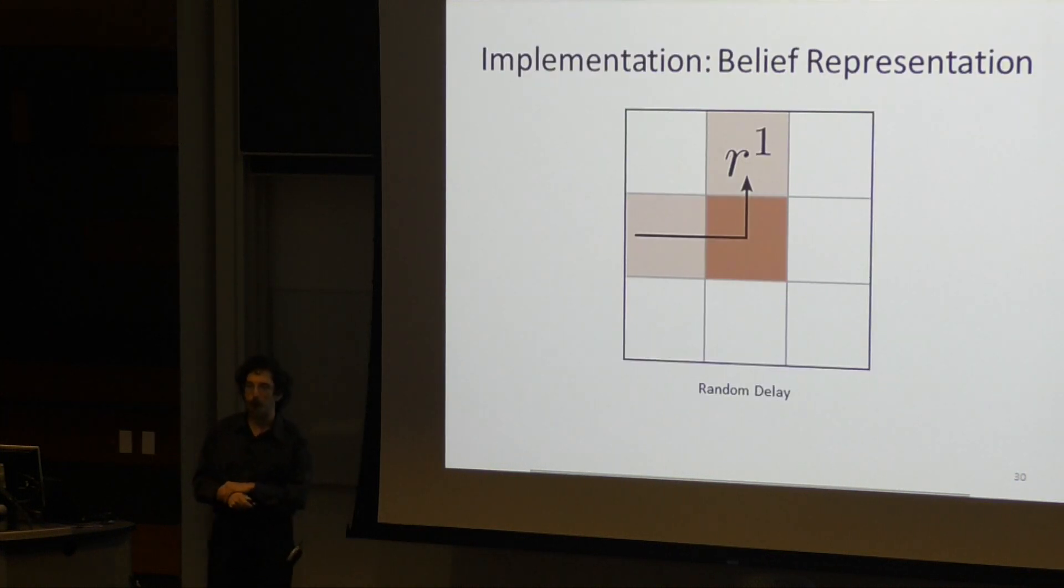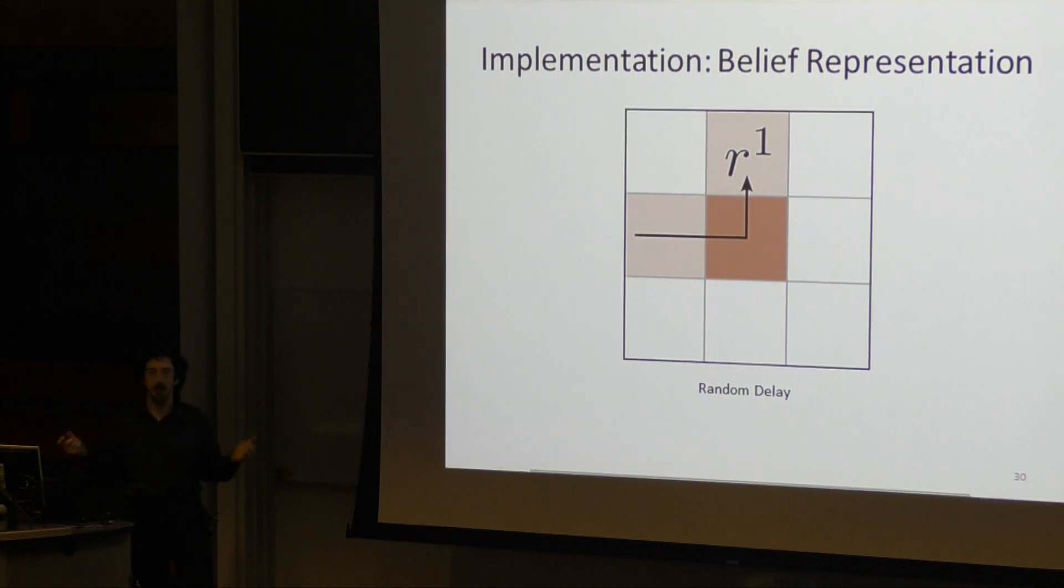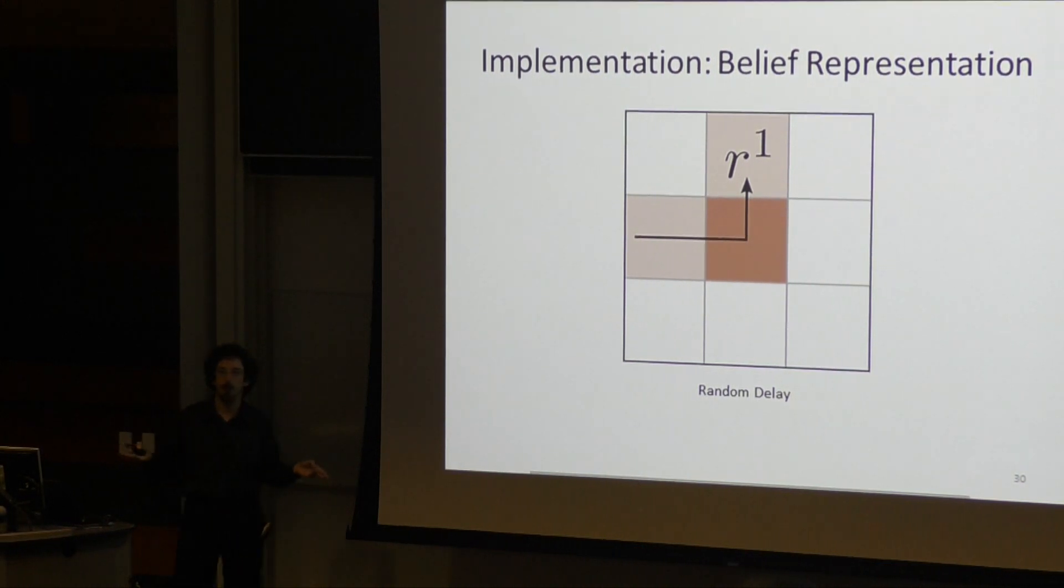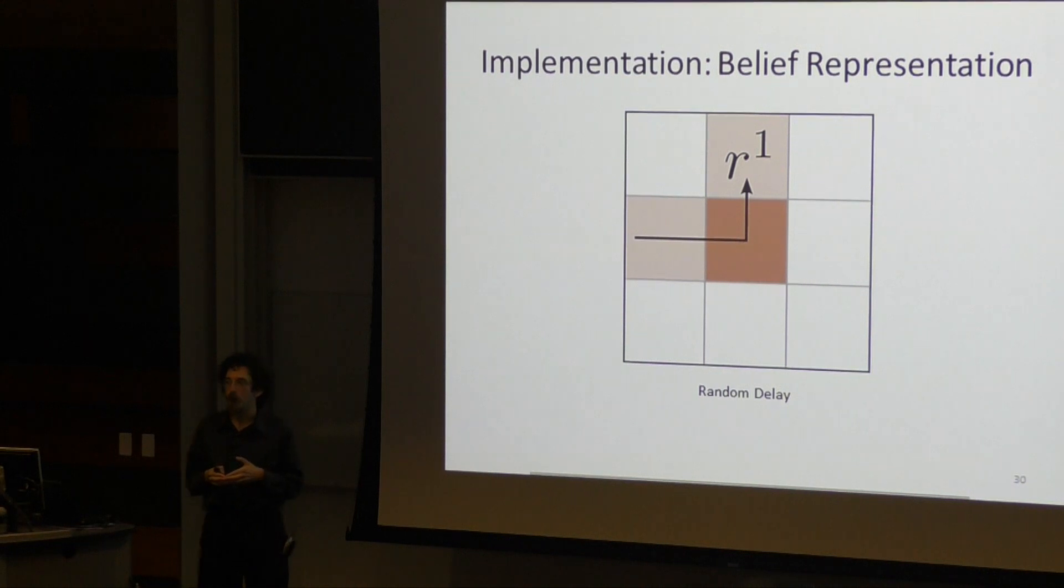Now we need to come up with a way of making this work on robots, or at least simulated robots. The first thing we have to choose is our belief representation. For single agent planning, it's kind of standard to use just a Gaussian to represent uncertain localization. In our case, we're more interested in robots that can do their own jobs really well and thus can localize well, but might have synchronization problems.